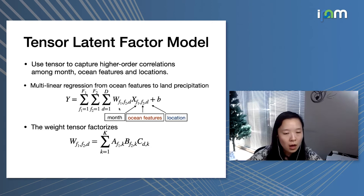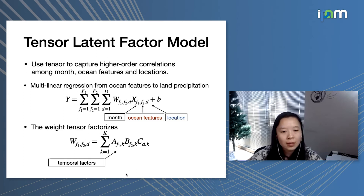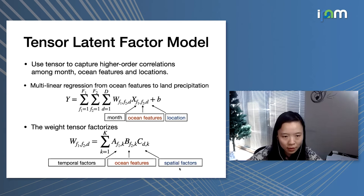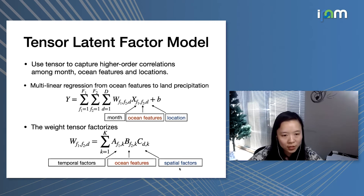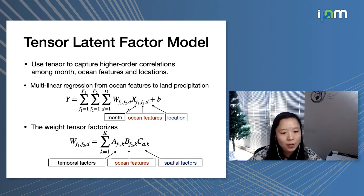We can use tensor models to capture the higher-order correlation across different variable types. The tensor X has three dimensions: the first is the number of months using an auto-regressive model; the second corresponds to ocean features including salinity and temperature; and the third dimension is location, concatenating measurements from different places in the west. We build a similar multilinear regression model using supervised learning mapping from tensor X to the precipitation outcome Y. Similarly, we have a tensor model W that we factorize into three matrices with K factors. The goal is to learn interpretable latent factors in model W that are useful for downstream applications.